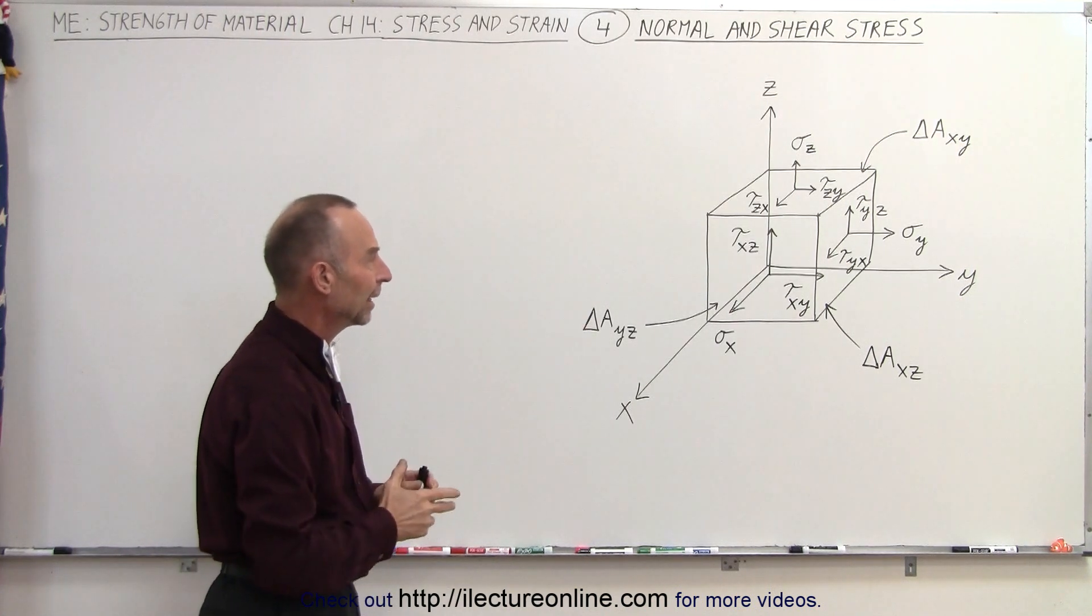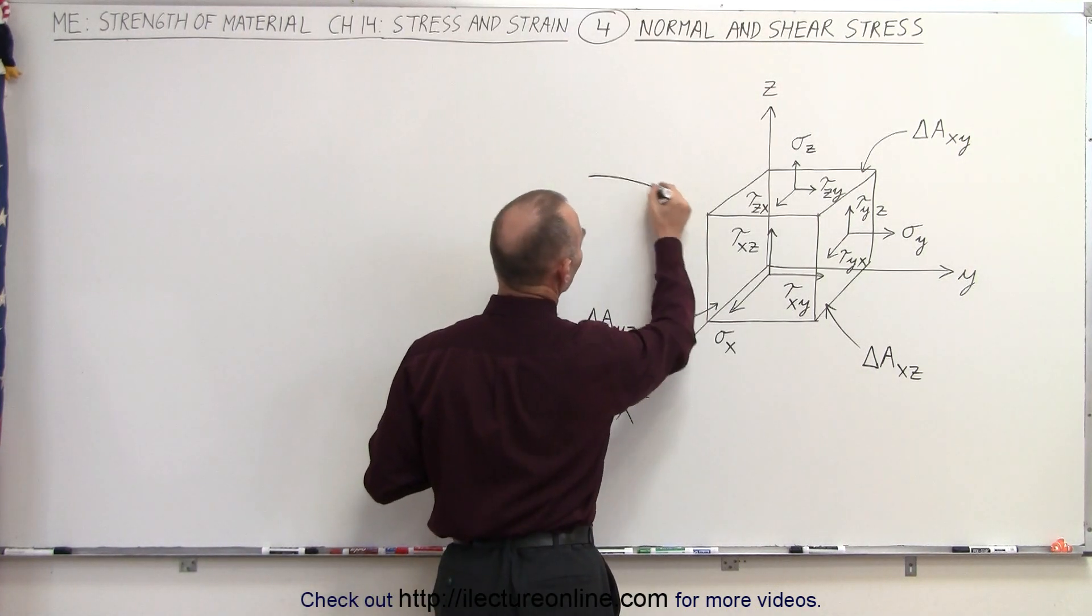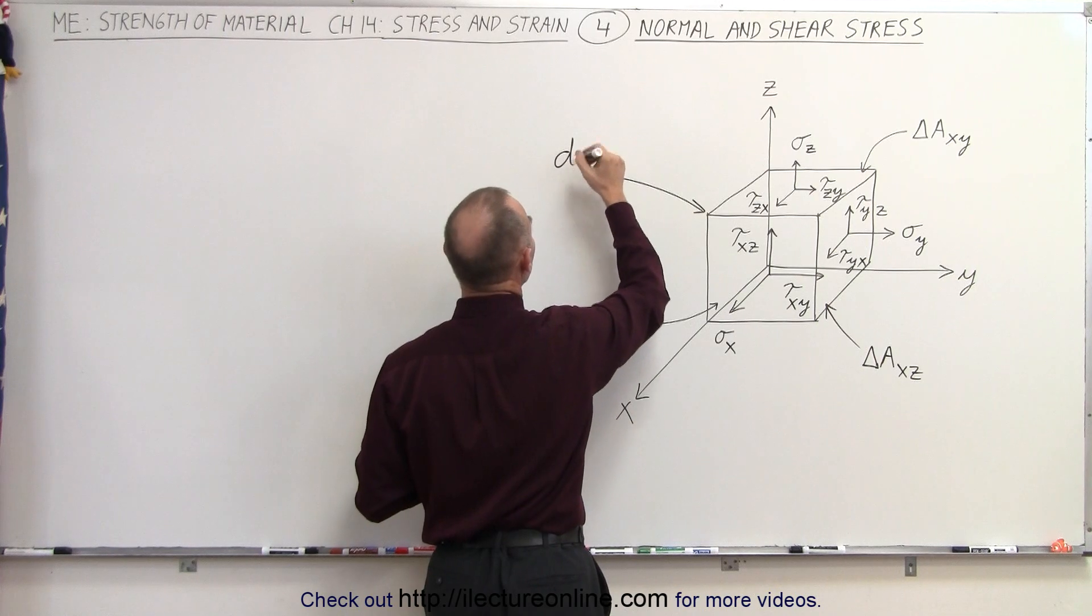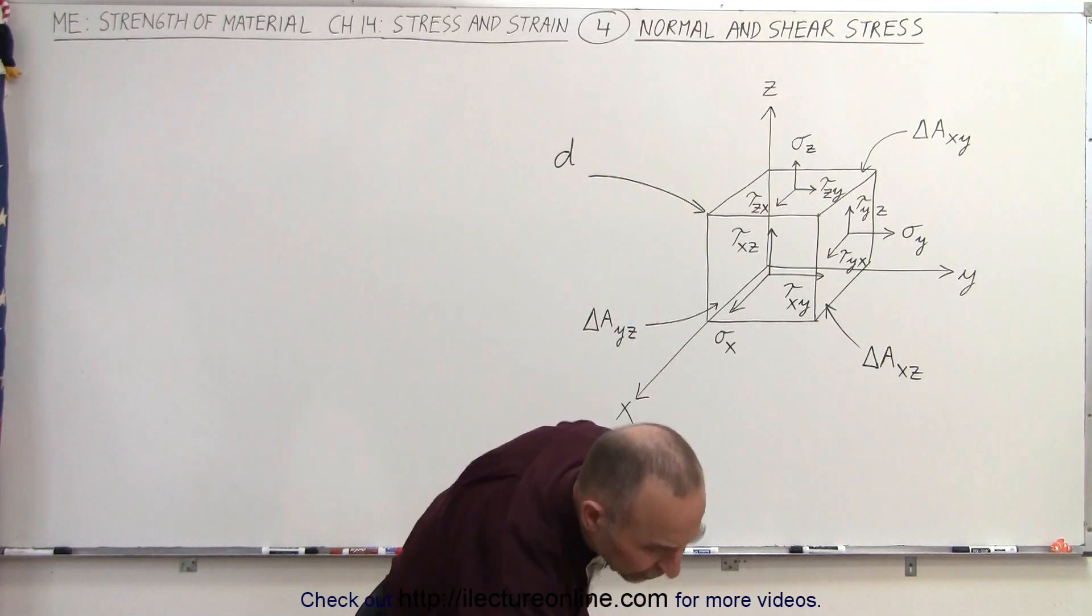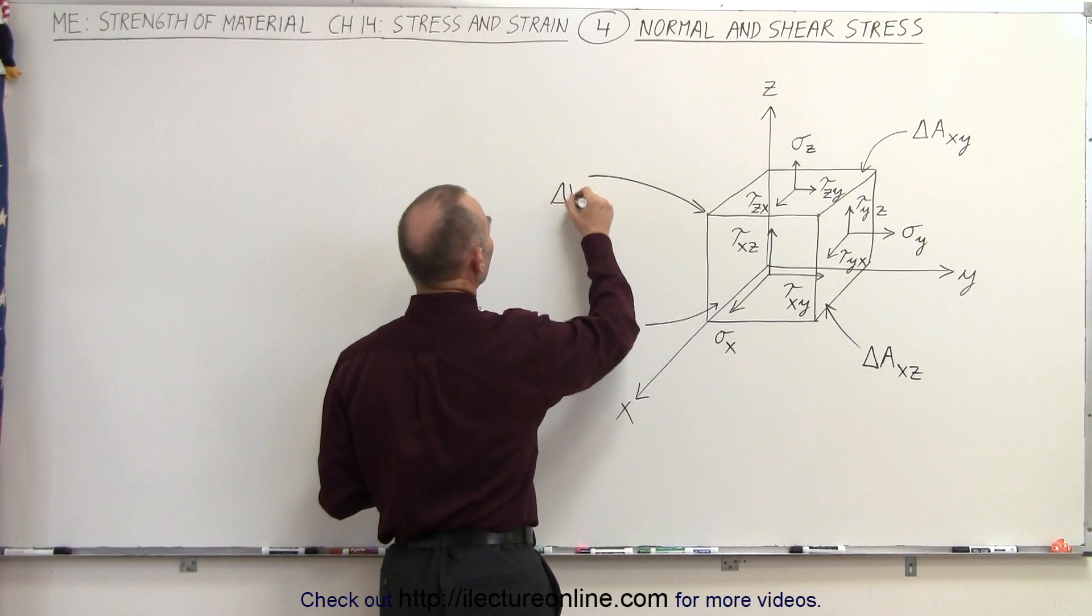Now, how do we illustrate that in a particular case? So here, what we can imagine is that we have a small volume element. So let's call this a small delta v. We'll do that later. So let's just simply call it a small delta v.